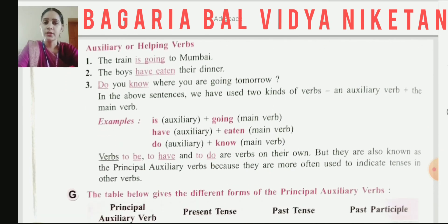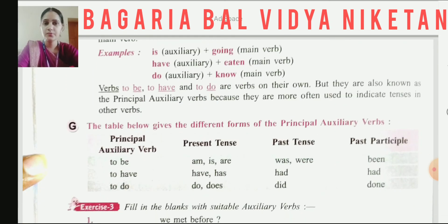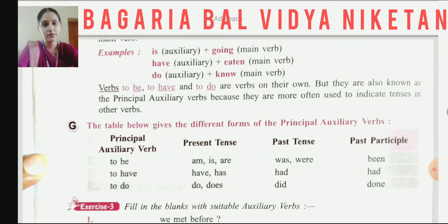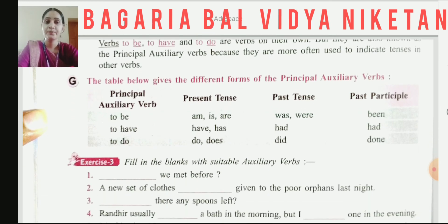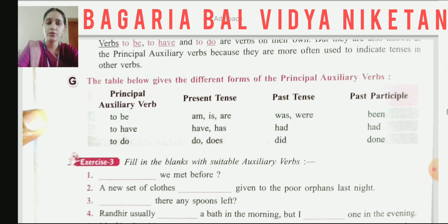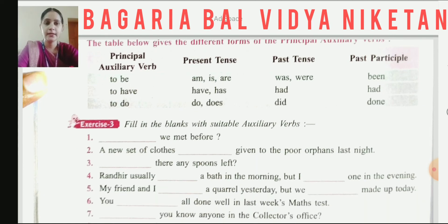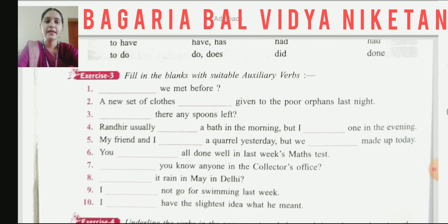I have explained to you about auxiliary and helping verbs — what auxiliary verbs are and what helping verbs are. In the table, the main principal auxiliary verbs are given: which ones come in present tense and which ones come in past tense — this is clearly shown for you.